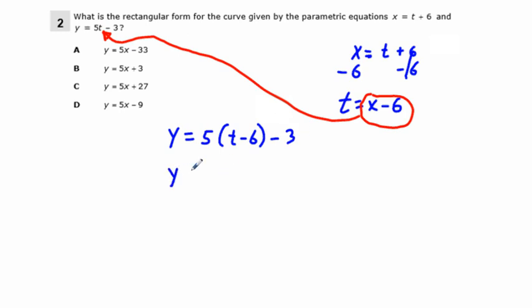We're going to get y equals, using the distributive property, 5t. And we're going to take 5 times negative 6, which would be minus 30, and subtract another 3. So we get y equals 5t minus 33. So our correct answer choice would be A.